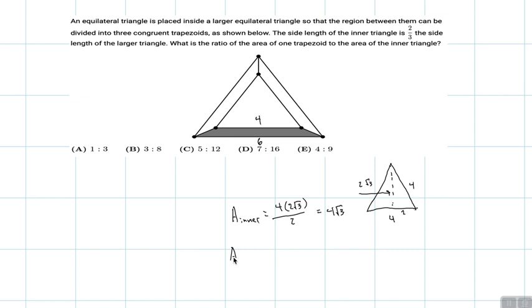Now I find the area of the outer triangle. So it's going to be the same thing, but this is six, so this is three. And this will be three root three.